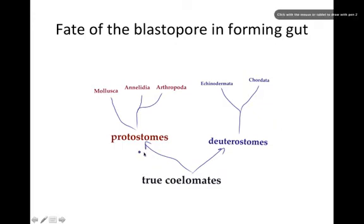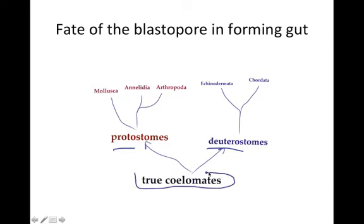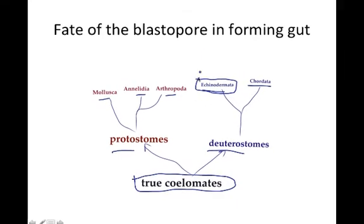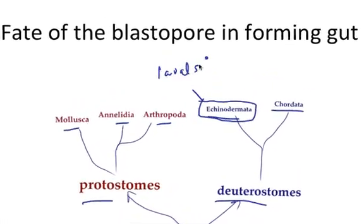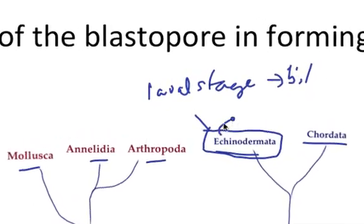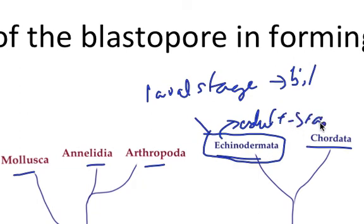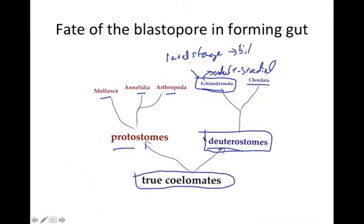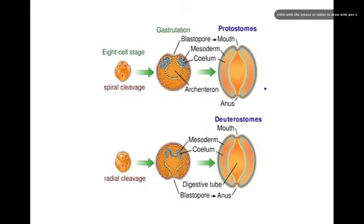In terms of true coelomates, we now look at two groups: protosomes and deuterostomes. Prior to those, we have pseudocoelomates such as roundworms, and acoelomates such as flatworms. Mollusks, annelids, and arthropods are protosomes; deuterostomes include phylum Echinodermata and phylum Chordata. Echinoderms are unique because in their larval stage they have bilateral symmetry, but in their adult stage they develop radial symmetry — so we look at their embryonic development to classify them as deuterostomes.